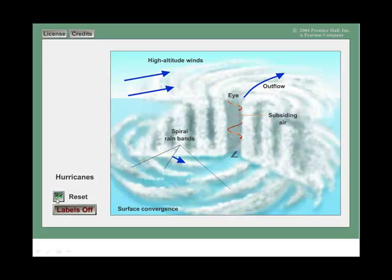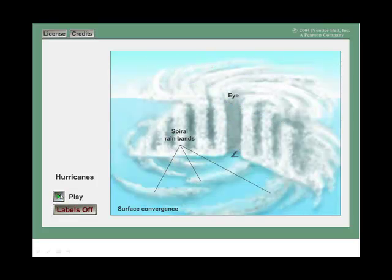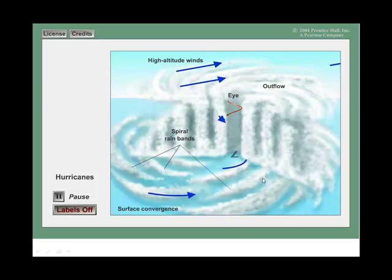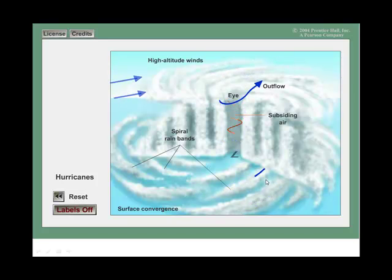Can you see that descending air with the high? I'll start all over again. But at the very end, and it's almost done, I won't play it again, I promise. But look for this descending air from a high to the low. And actually, wherever the eye is, it's very eerily calm and warm and clear. Subsiding air.